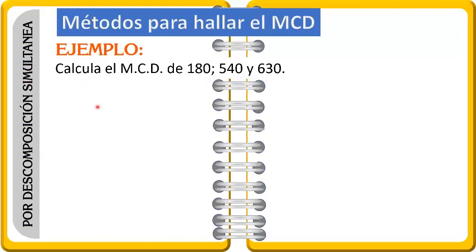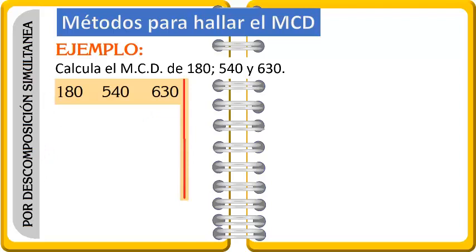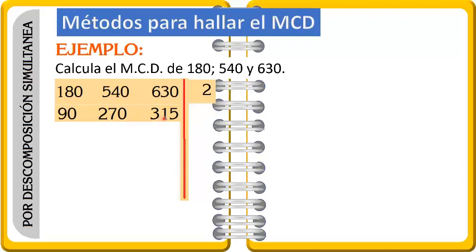¿En qué consiste la descomposición simultánea? Lo vamos a hacer de la siguiente manera: esto que ustedes conocen como mínimo común múltiplo es la forma de descomponer los números. Por este lado los vamos a dividir con números primos. 180, 540 y 630 los vamos a dividir entre 2. La mitad de cada uno viene a ser: 90, 270 y 315. Para el máximo común divisor, debe dividirse a los 3 números; si uno de ellos no se puede dividir entre 2, vamos a pasar a dividir con otro número primo.